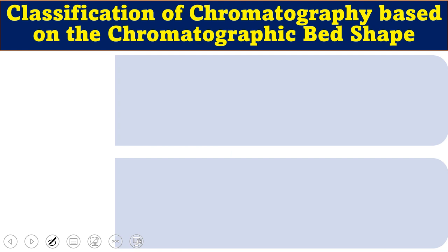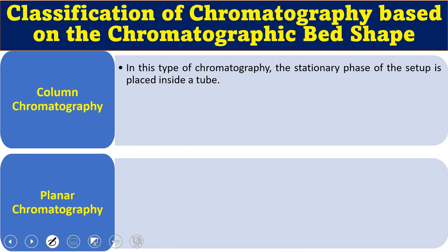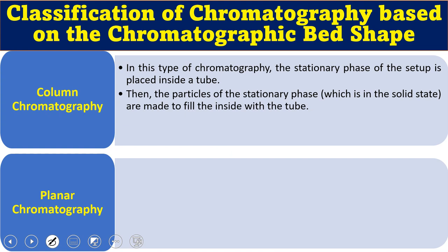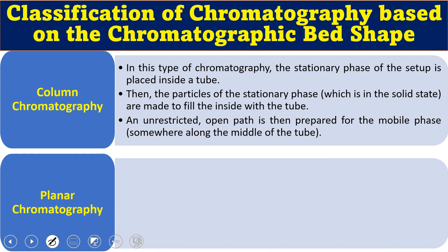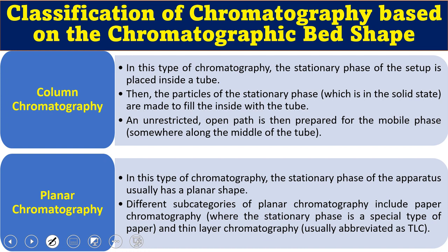Classification based on chromatographic bed shape gives two major types: column chromatography and planar chromatography. In column chromatography, the stationary phase is placed in a tube or column, packed with solid stationary phase particles, with an open path for the mobile phase along the middle. In planar chromatography the stationary phase is in a planar shape; subcategories include paper chromatography—using a special paper as stationary phase—and thin layer chromatography (TLC), which uses a glass plate coated with silica gel.